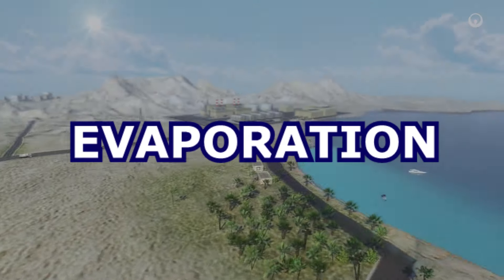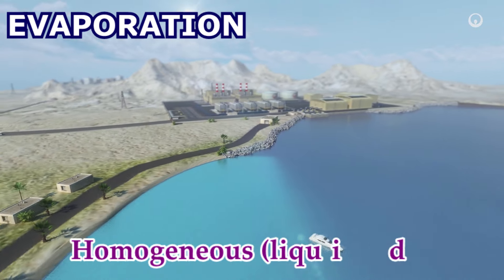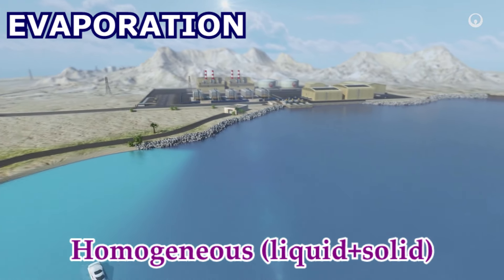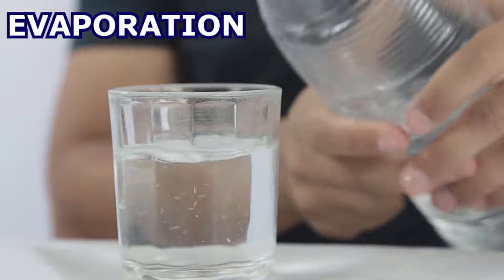Evaporation is a method used to separate homogeneous mixtures of a liquid and solid, for example, water and salt.